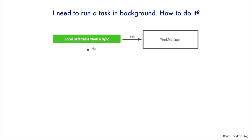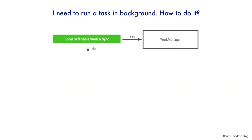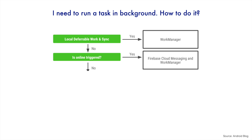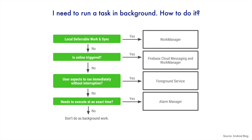If you want something deferrable that runs locally on the machine with no external dependency and you want to do a sync kind of work, then use work manager. If the answer is no and the task needs to be triggered from the background — that is, online triggered — then use Firebase Cloud Messaging and work manager. If you expect the task to run immediately without interruption, use foreground services. If you want to execute at an exact time, alarm manager is the solution.